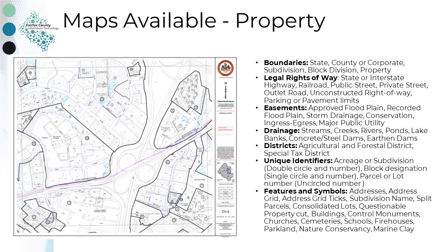Property maps display boundaries, legal rights of way, easements, drainage features, districts, unique identifiers, and features and symbols such as addresses and buildings. Source materials for the property maps include site plans, date descriptions, subdivision plots, and acreage plots. A plot is a detailed drawing taken from the survey of a property boundary. The collection dates back to 1960.